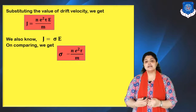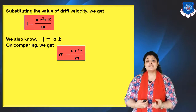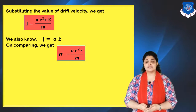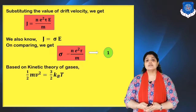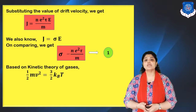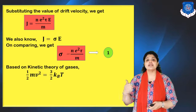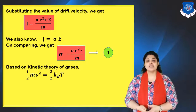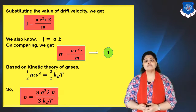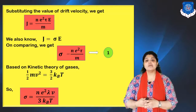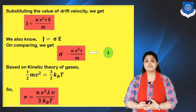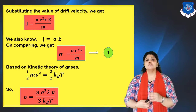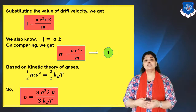Classical free electron theory believes electrons behave like gas molecules and obey all the laws of kinetic theory of gases. According to kinetic theory of gases, ½Mv² = (3/2)kT. From this equation, substituting the value of M in the above equation, we get the expression of σ as Ne²λv / 3kT, where λ is the mean free path — the average distance travelled by electrons between two successive collisions. This is the expression of electrical conductivity with respect to temperature.